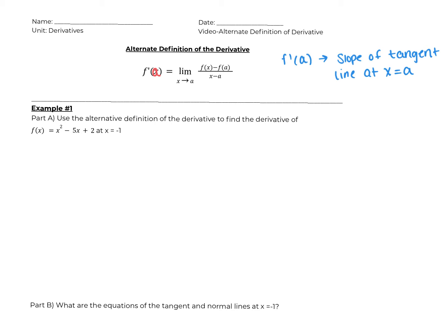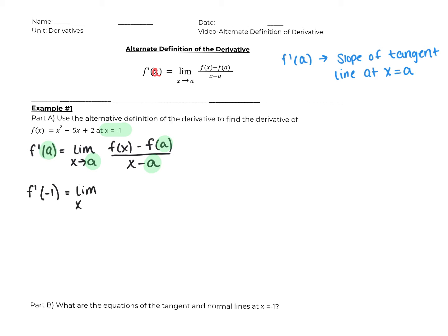I'm going to start by writing the definition: f prime of a equals the limit as x approaches a of f of x minus f of a, all over x minus a. Everywhere we see an a, we replace it with negative one. So f prime of negative one equals the limit as x approaches negative one of f of x minus f of negative one, over x minus negative one.